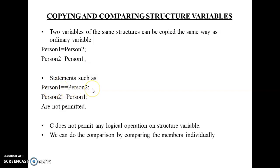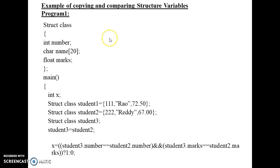For comparison operation, consider these two statements: person one equals person two, or person two not equal to person one. We are comparing the two variables, but this is not permitted in C. If I want to compare structure variables, I cannot do it directly — I should compare the members individually.